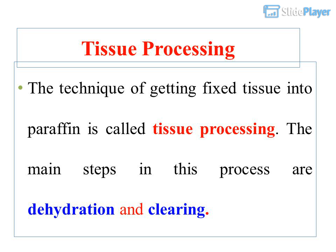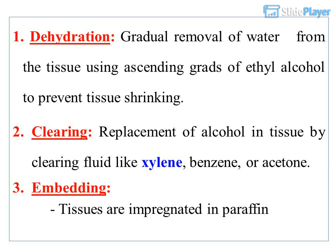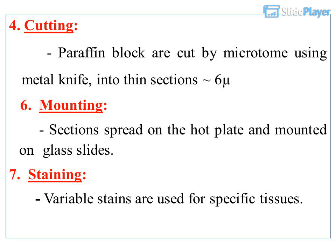Tissue processing: The technique of getting fixed tissue into paraffin is called tissue processing. The main steps are: 1. Dehydration — gradual removal of water from the tissue using ascending grades of ethyl alcohol to prevent tissue shrinking. 2. Clearing — replacement of alcohol in tissue by a clearing fluid such as xylene, benzene, or acetone. 3. Embedding — tissues are impregnated in paraffin. 4. Cutting — paraffin blocks are cut by microtome using a metal knife into thin sections of 6 microns. 5. Mounting — sections spread on the hot plate and mounted on glass slides. 6. Staining — variable stains are used for specific tissues.